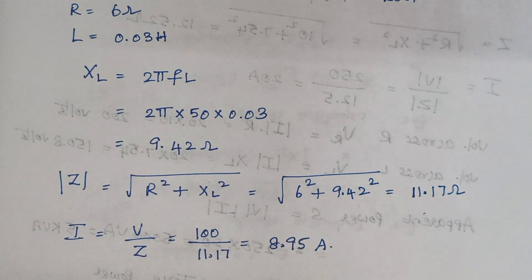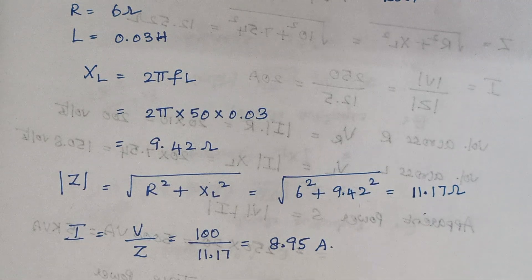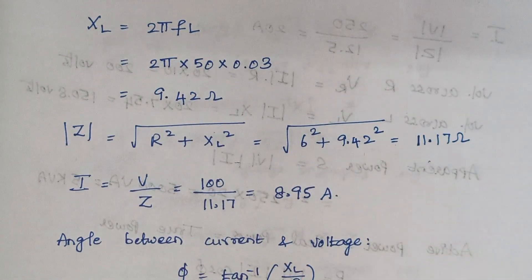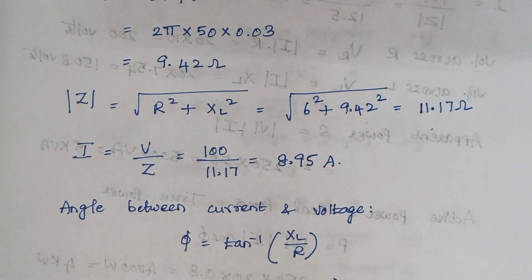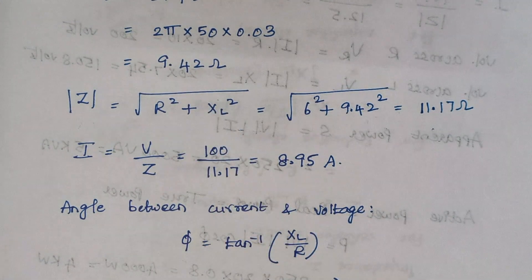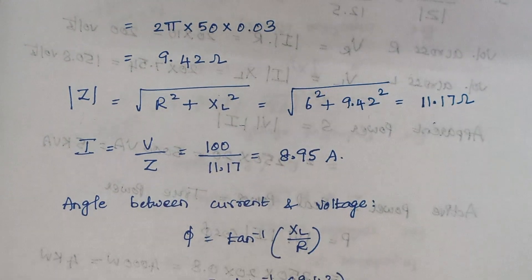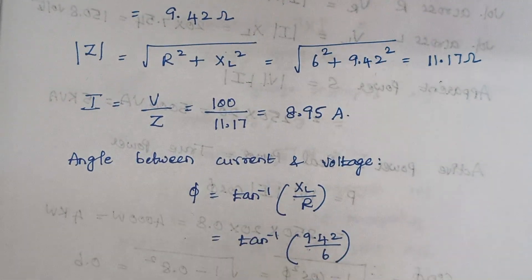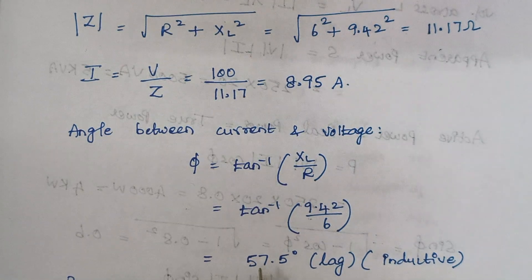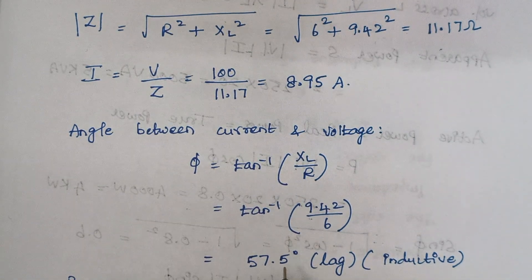The next step is to calculate the angle between the current and voltage. That is given by the formula φ = tan inverse of XL by R. We know the value of XL and the value of R is given in the problem. Substituting directly, the angle is 57.5 degrees.